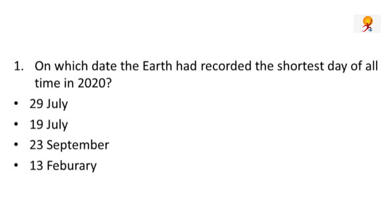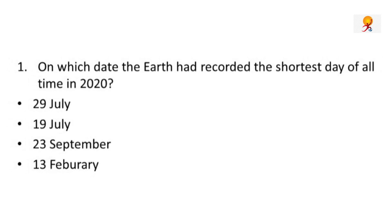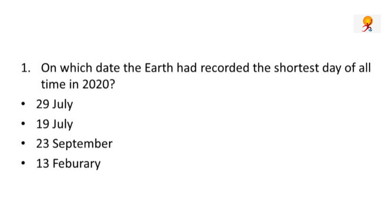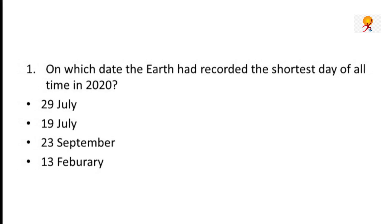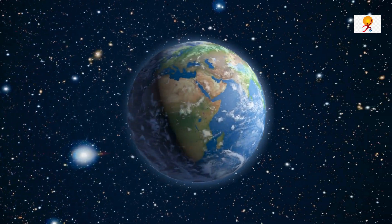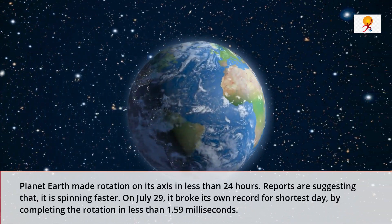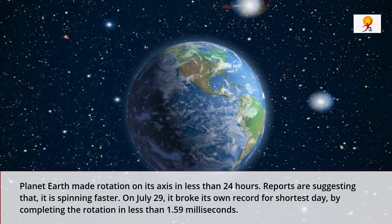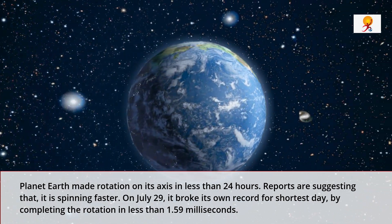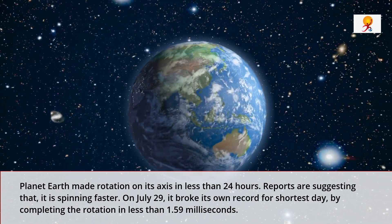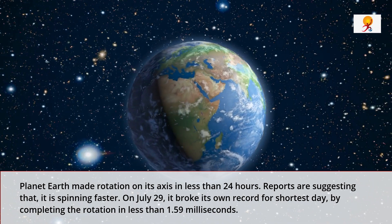Recently, planet Earth made rotation on its axis in less than 24 hours. Reports are suggesting that it is spinning faster. On July 29, it broke its own record for shortest day by completing the rotation in less than 1.59 milliseconds.